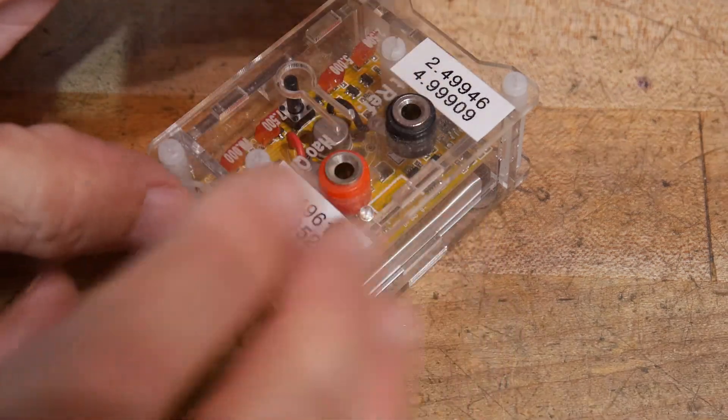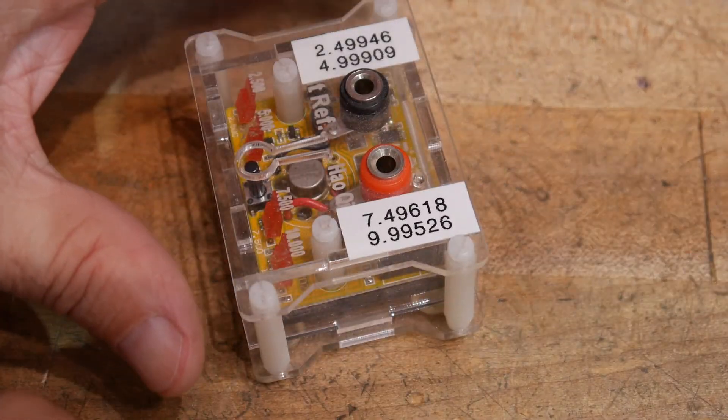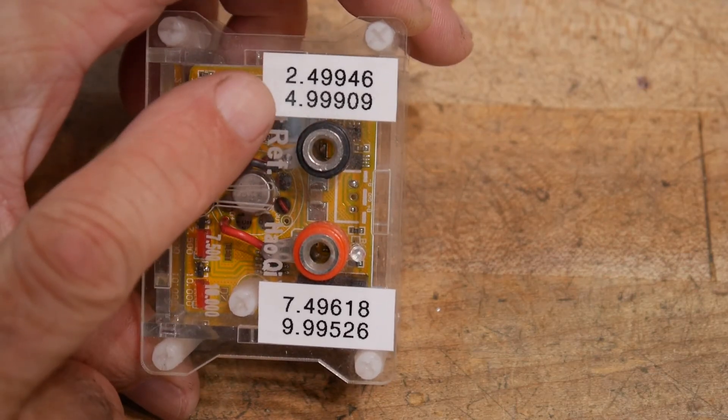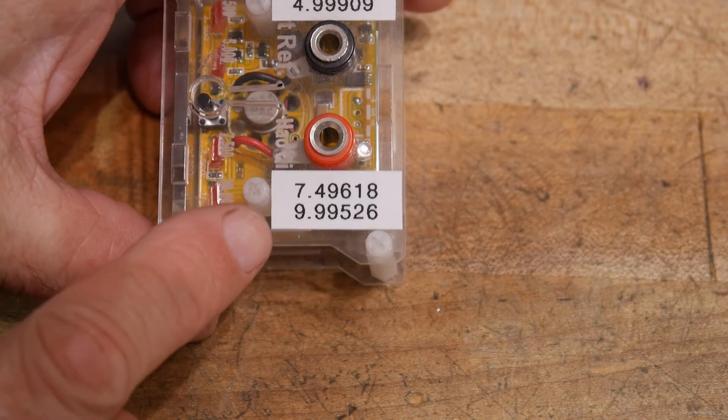Once the lithium battery is charged, then this thing will operate all on its own. You can see here that it outputs 2.5 volts, 5 volts, 7.5 volts, and 10 volts.